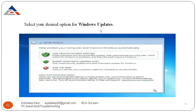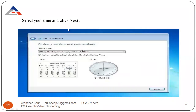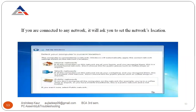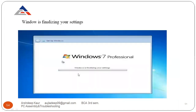Click Next, then select your desired option for Windows Update — it's up to you how you want to update your computer system. Next, select the time and date accordingly. If you are connected to any network, it will ask you to set the network location depending on whether you are on Wi-Fi or another network.